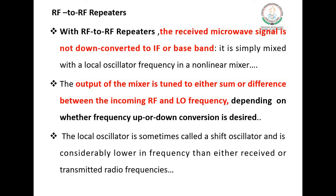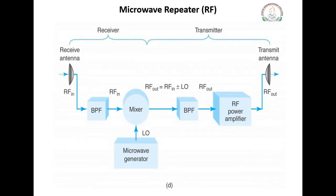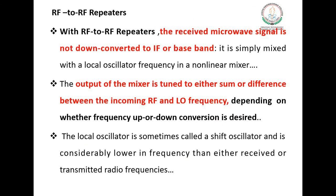The third type is the RF repeater. With an RF-to-RF repeater, the received microwave signal is not downconverted to either IF or baseband. It is simply mixed with a local oscillator frequency in a non-linear mixer. The output of the mixer is tuned to either the sum or the difference between the incoming RF and the local oscillator frequency, depending on whether frequency up or down conversion is desired. The local oscillator is sometimes called a shift oscillator and is considerably lower in frequency than either the received or transmitted radio frequencies.